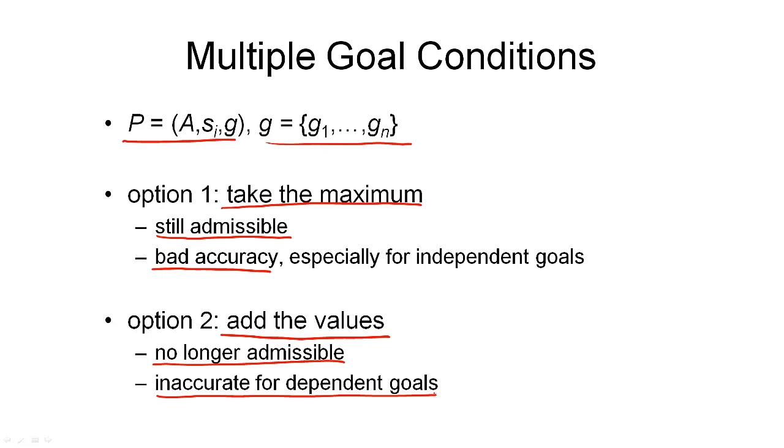But at least we now have two heuristics we can use to apply A star to forward state-based search. And one thing to note for both of these heuristics, which is quite interesting, is they're based on the planning graph, but neither of those really requires the computation of the mutex relations. So we could use them in a planning graph with or without mutex relations, meaning we actually have four different heuristics already.